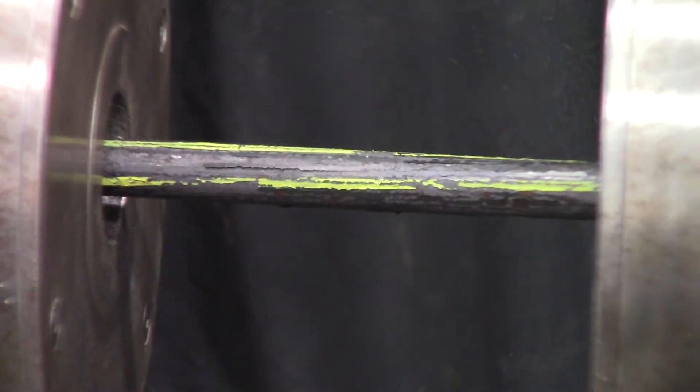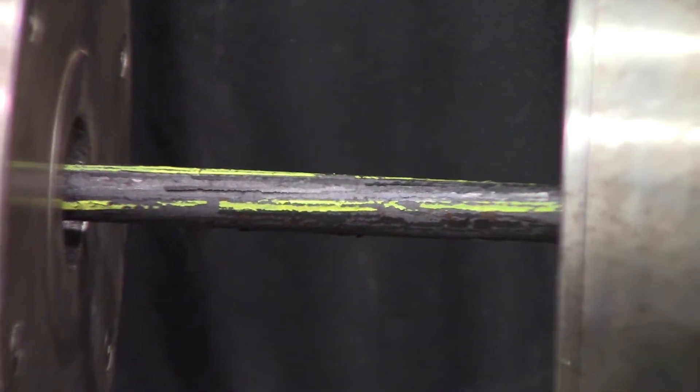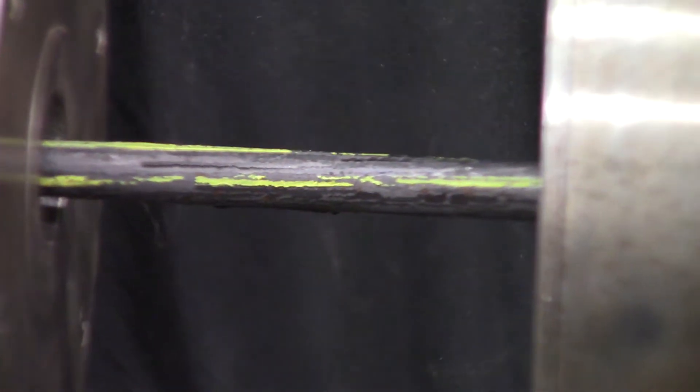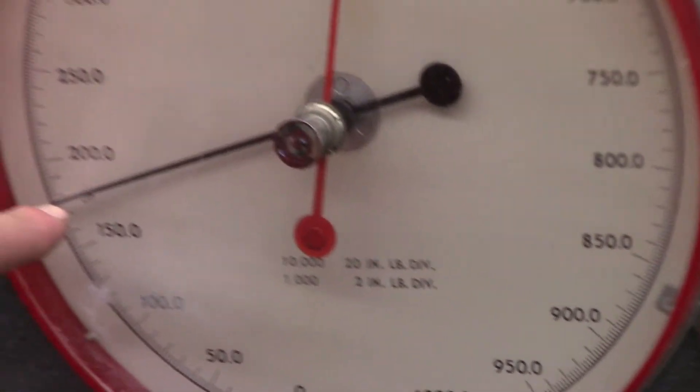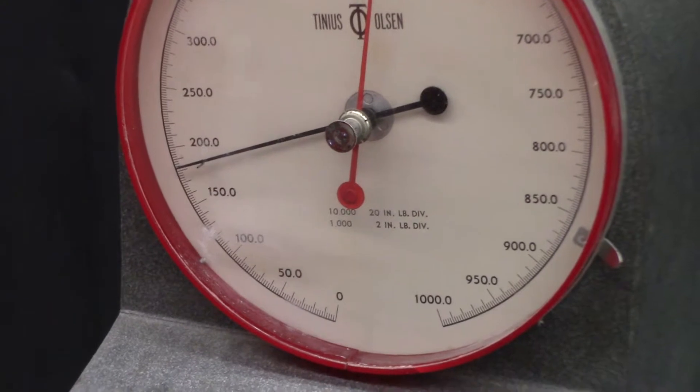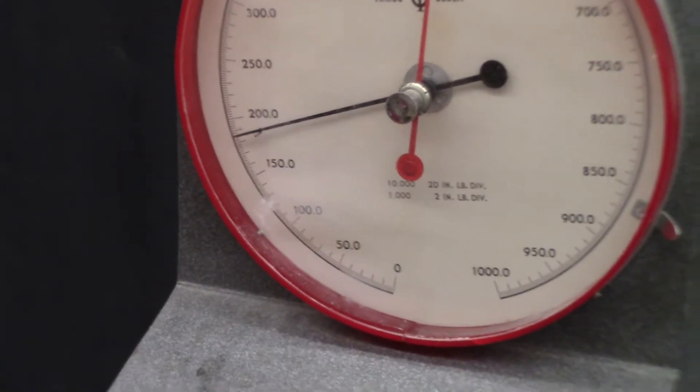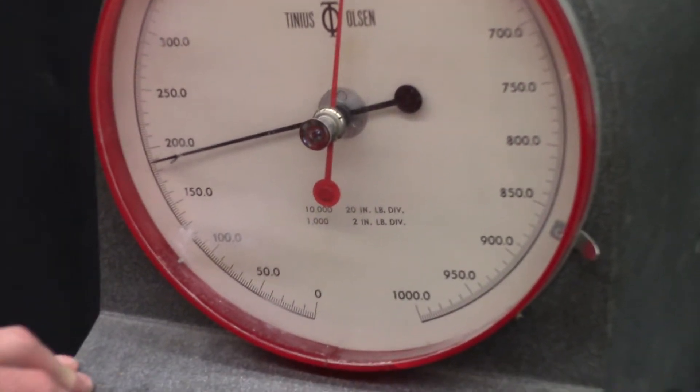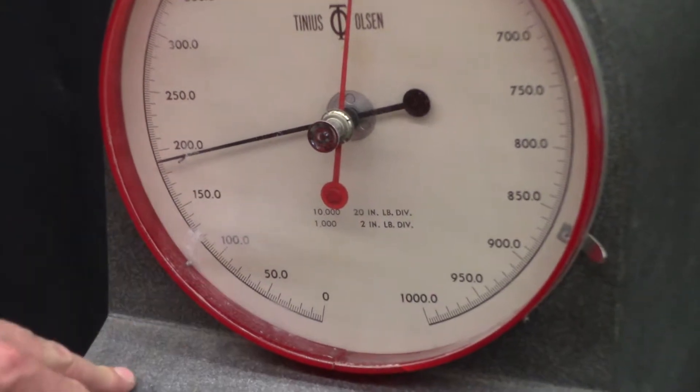And we can see that this piece, probably mild steel, is almost maxed out at about 175 here in inch-pounds. You can see it's almost made a quarter turn there.